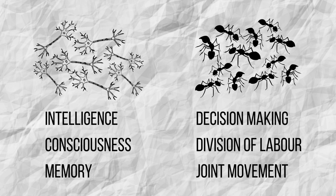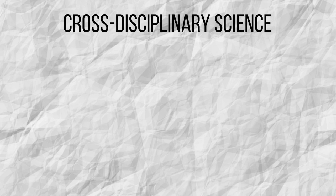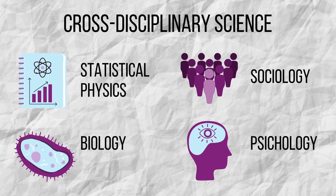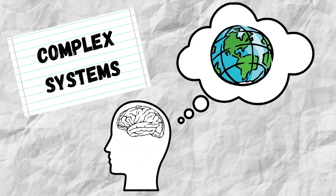As you have seen throughout the video, complexity science is an interdisciplinary science. That is to say, it encompasses many different disciplines, such as statistical physics, sociology, biology, or psychology. The study of complex systems offers us a new way of understanding the world. Although there is still a long way to go, we are on the right path towards understanding reality.